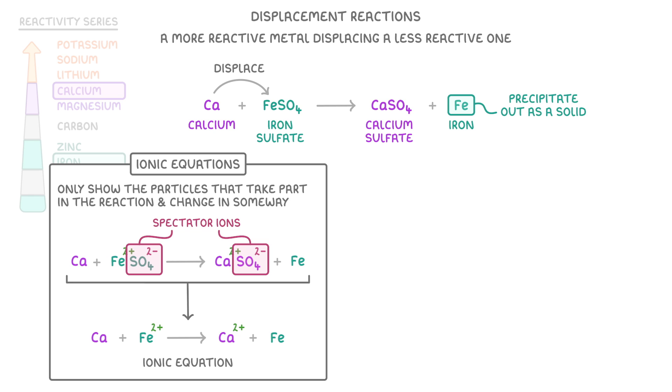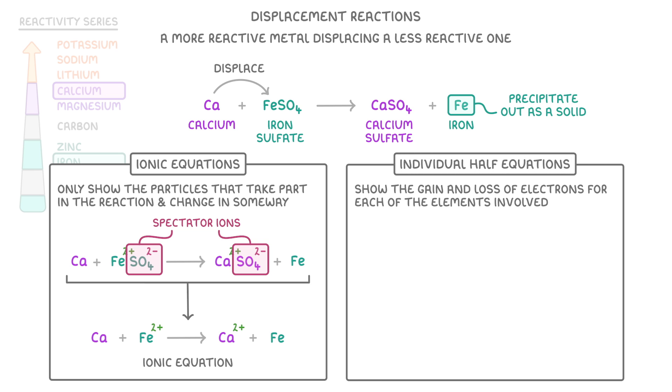We can actually break this down even further though, by writing individual half equations, which show the gain and loss of electrons for each of the elements involved. To do this, we first copy the ionic equation, but only for one particular element. So for calcium, we would write that a neutral calcium atom goes to form a calcium 2+ ion. Next, we need to add our electrons to make the charges balance. As the calcium atom loses two electrons, we can think of the calcium ion as one product and the two electrons as another product. So we put plus two electrons on the right-hand side.